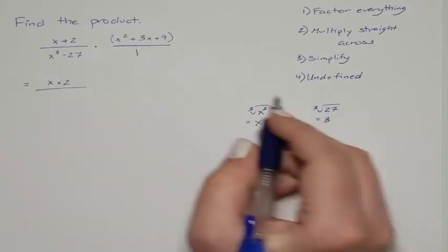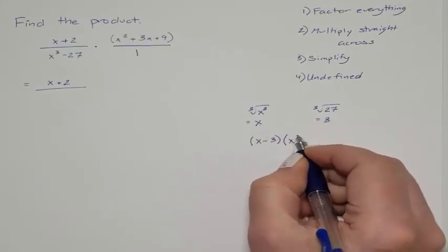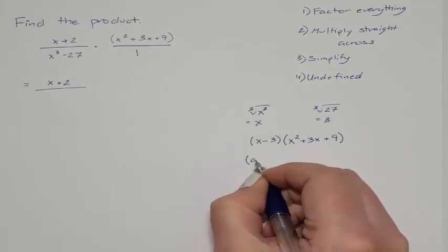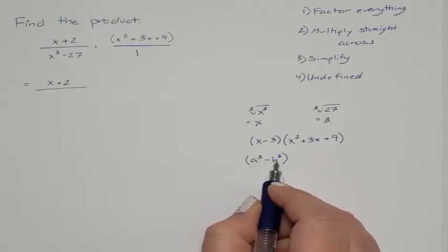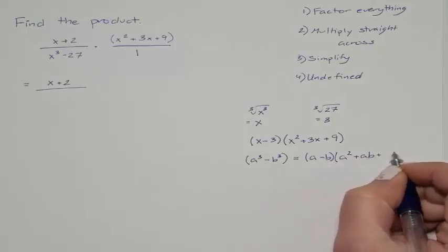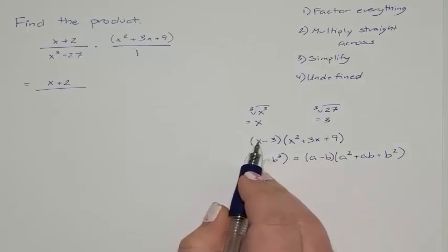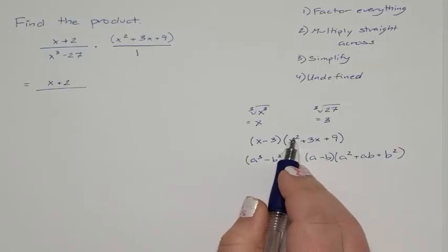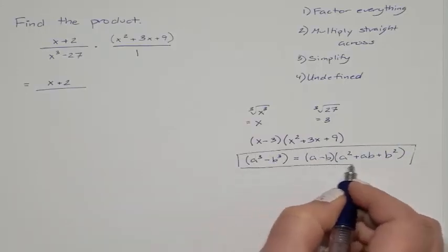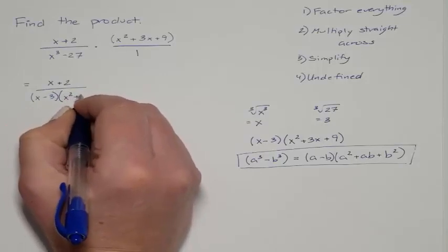For a difference of cubes, you take x minus 3, then x squared plus the product of x and 3, plus 3 squared, giving x² + 3x + 9. The general rule is: a³ minus b³ equals (a − b)(a² + ab + b²). So our factored denominator is (x − 3)(x² + 3x + 9).